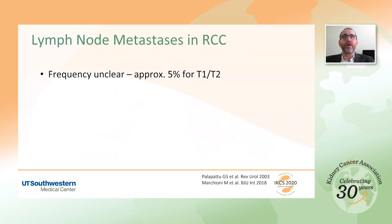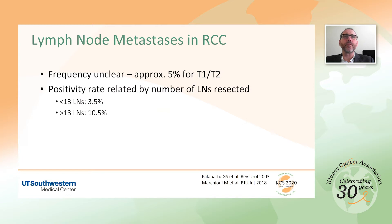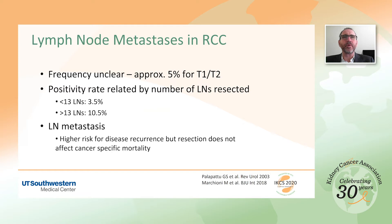The frequency of metastasis to lymph nodes in kidney cancer is not entirely clear, but probably occurs in about 5% of T1 and T2 tumors. The positivity rate increases with the number of lymph nodes resected, reaching about 10% when 13 or more lymph nodes are removed at surgery. Patients with lymphatic metastasis have a higher risk of disease recurrence, although resection does not improve cancer-specific mortality.